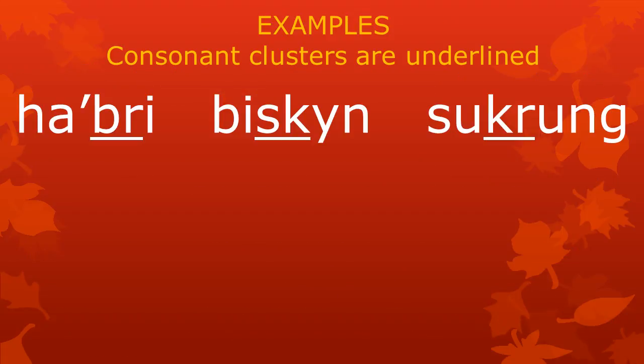Here we see three examples of words with consonant clusters we are interested in for this lesson. The clusters are underlined. The words are HABRI, BISKIN, and SUKRUN. The clusters BR, SK, and KR are in the same meaningful parts of these words.